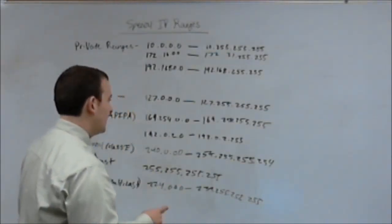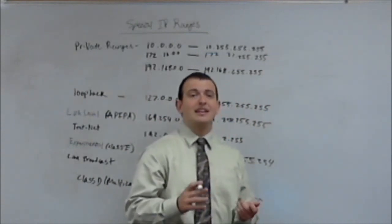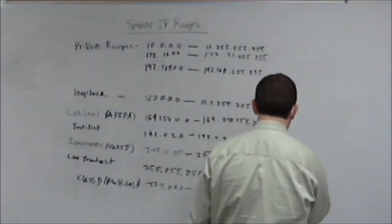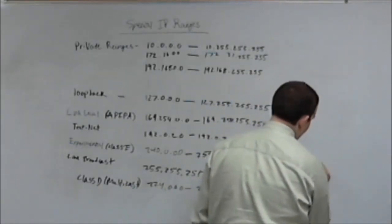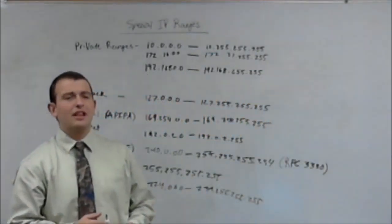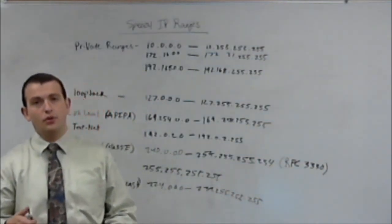Now, one other thing I'd like to mention about class E is if you'd like to know more about class E, what it is, and how it's meant to be used, you can review RFC, request for comment, 3330. So again, if you guys would like to know more about experimental class E addresses, you can review that RFC.